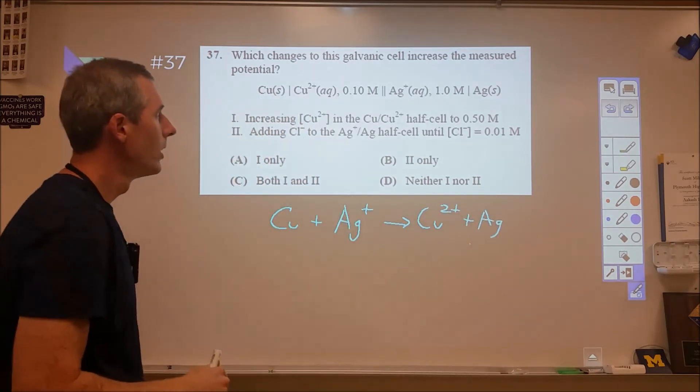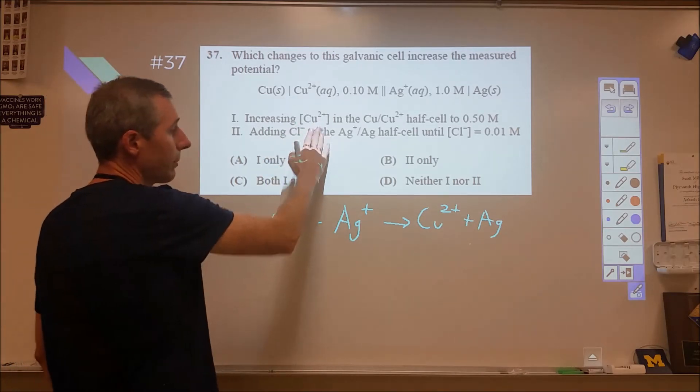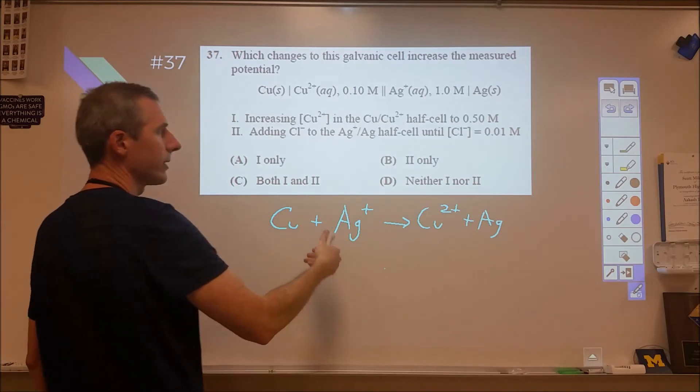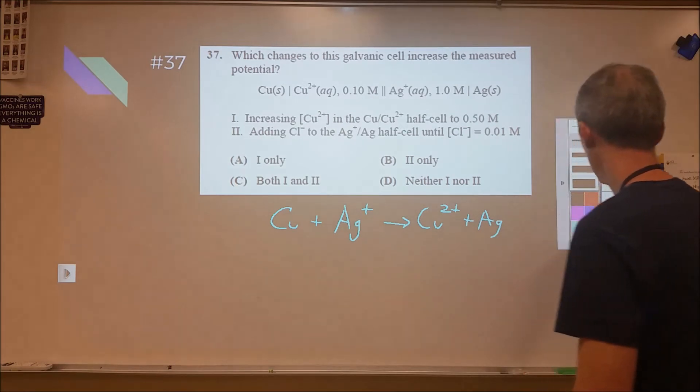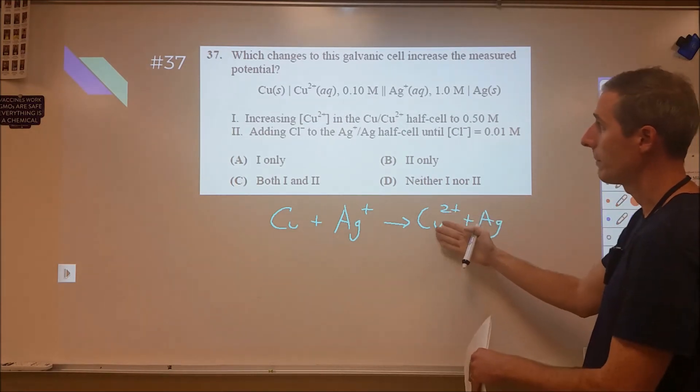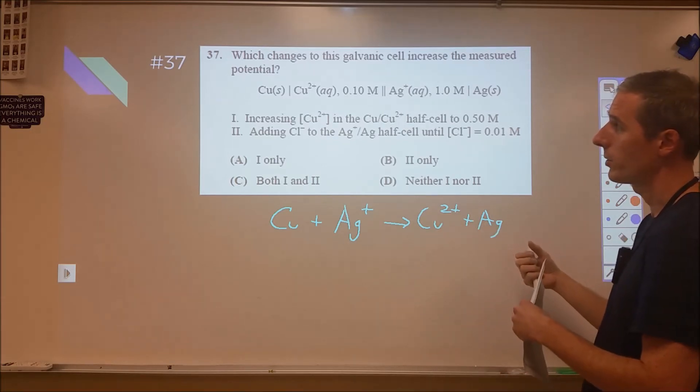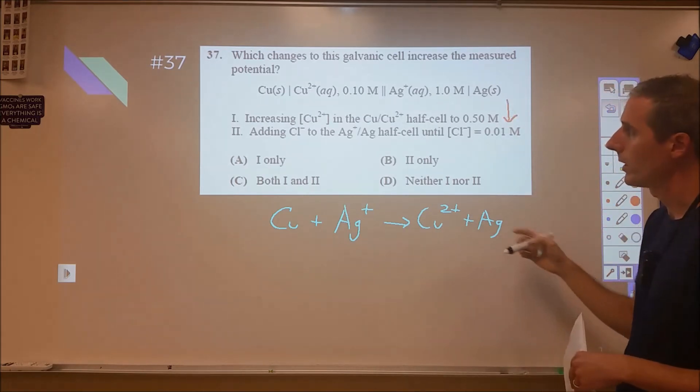So from a Le Chatelier's principle standpoint, if we increase the copper 2 plus concentration, that's going to cause a shift back towards the reactants, and therefore, that's going to be a lower voltage. Really, you can bear that through a little more accurately by actually saying that the increase of the copper 2 plus is going to cause a greater pull in the electrons in the opposite direction of the way you want them to travel, and therefore, this is going to cause a decrease in the voltage.